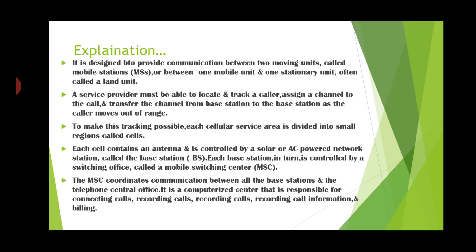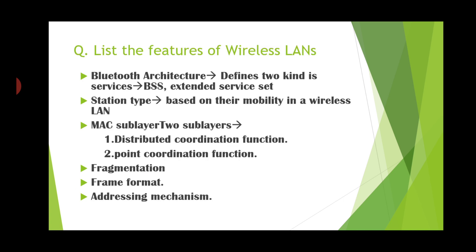So on this you are getting five marks questions and this is a repeated question. Now we will see the features of wireless LANs. Bluetooth architecture defines two kinds of services: BSS and extended service set. Stations are typed based on their mobility in a wireless LAN. The MAC sub-layer has two sub-layers: distributed coordination function and point coordination function. Another feature is fragmentation — data will be fragmented in wireless LAN. Then frame format and addressing mechanism. Wireless LAN uses different addressing mechanisms.